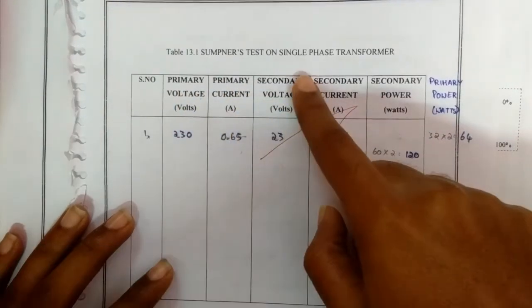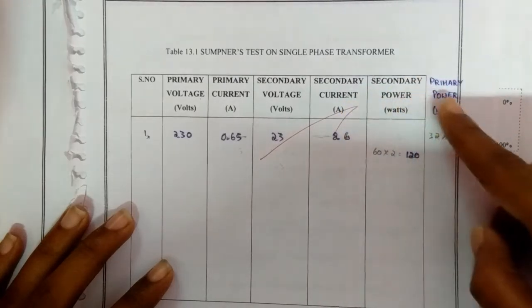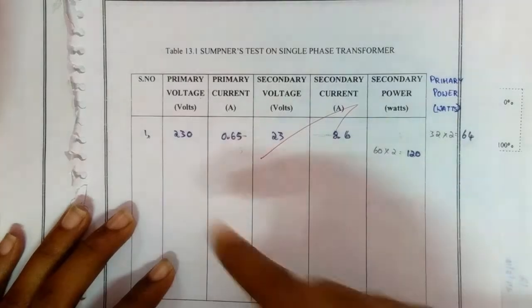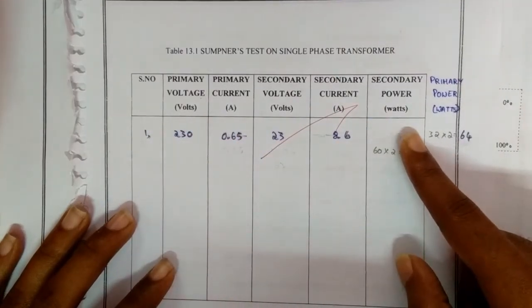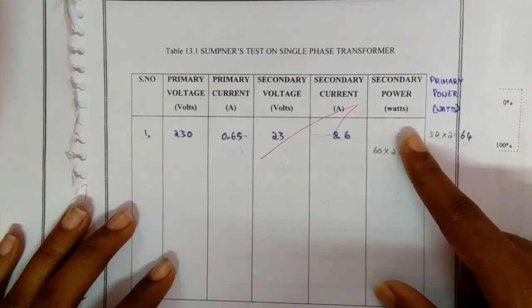The corresponding readings are noted down: primary voltage, primary current, secondary voltage, secondary current, secondary power in watts, and primary power in watts. With these values, we will calculate the formula for regulation and efficiency.